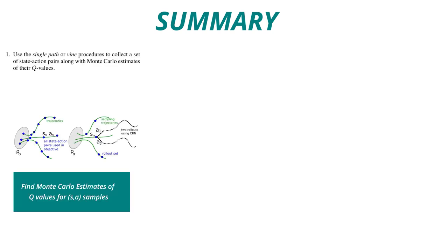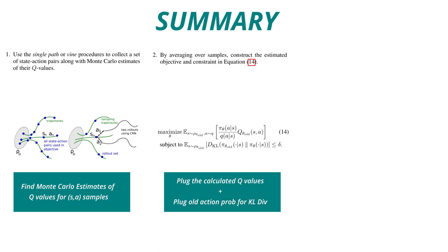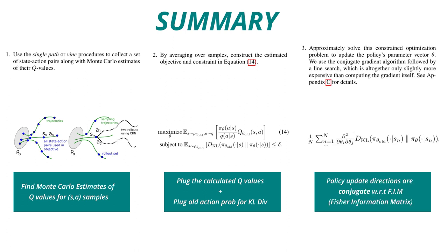Section 6 summarizes these policy optimization algorithms. Step 1: use the single path or vine procedures to collect a large number of state-action pairs and find their Q-values based on Monte Carlo estimation. Step 2: construct the estimated objective and constraint. Step 3: solve this constrained optimization problem to update the policy parameters. The authors use the conjugate gradient algorithm with line search, though you can use whatever optimizer you prefer.